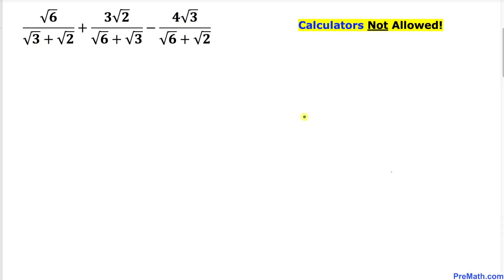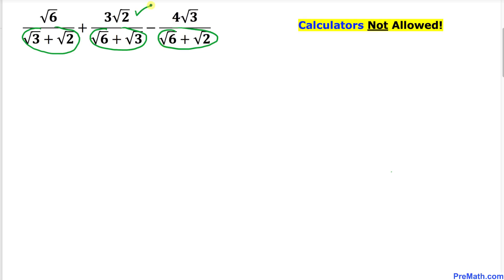Let's go ahead and get started with the solution. As we can see, it's not easy to find their least common denominator because all these denominators are distinct. So we are going to manipulate this problem by just looking at the second and third terms.